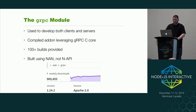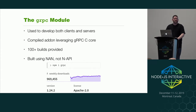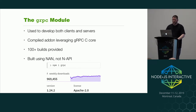We looked at the gRPC module, which builds on top of a C core — it's a native compiled add-on. It actually predates N-API, so it's built using NAN, which is no longer considered the best way to write native add-ons.